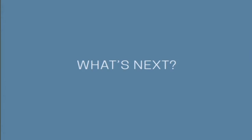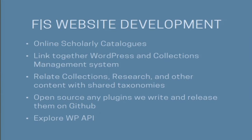Now that the design process is complete — for now, there's always room for iteration — what's next? The first item is actually to build the site. This will include reusable templates for our online scholarly catalogs, linking WordPress with our collections management system, relating our collections, research, and content with shared taxonomies from within those systems, open sourcing any plugins we write and releasing them on GitHub, and exploring the WP API using hardware within our physical space.